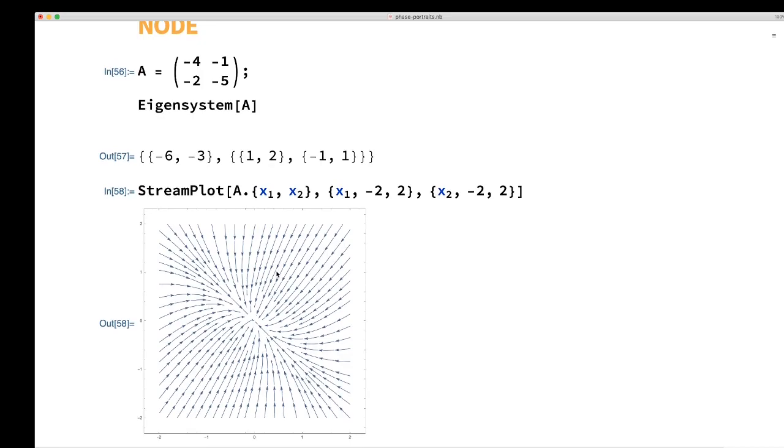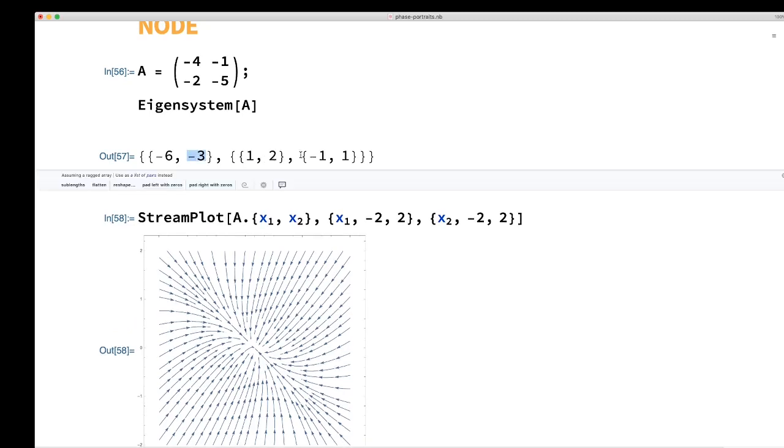When we look at the solutions, we'll notice that there are two eigenvectors here. The one with the larger eigenvalue, negative 3, is the eigenvector negative 1, 1. So that's this line from top left to bottom right. And then the other eigenvector is 1, 2, so it would be something like this line here.